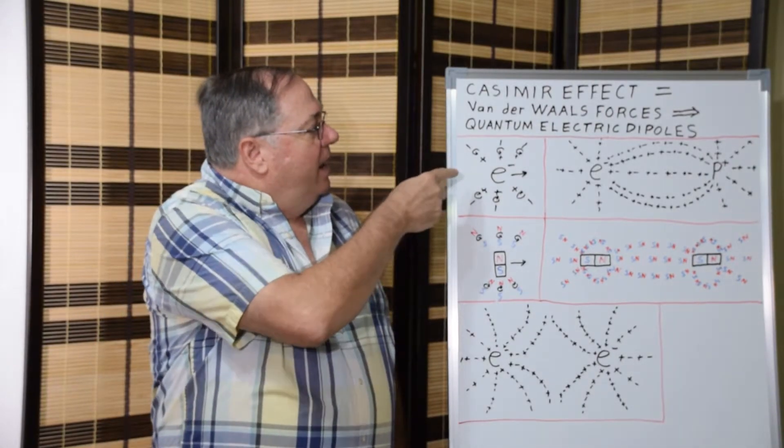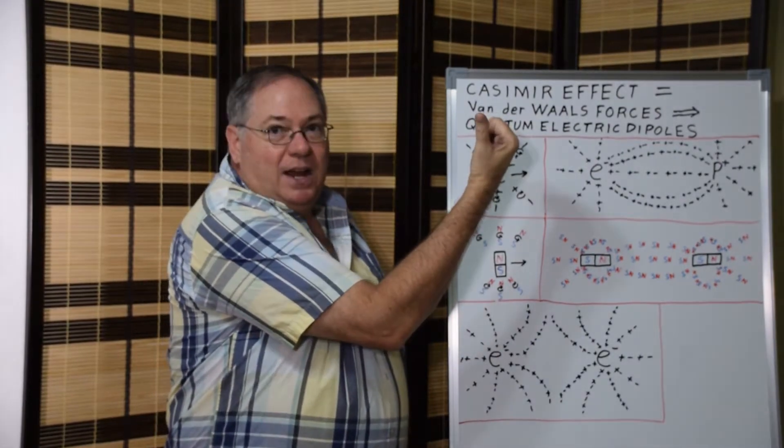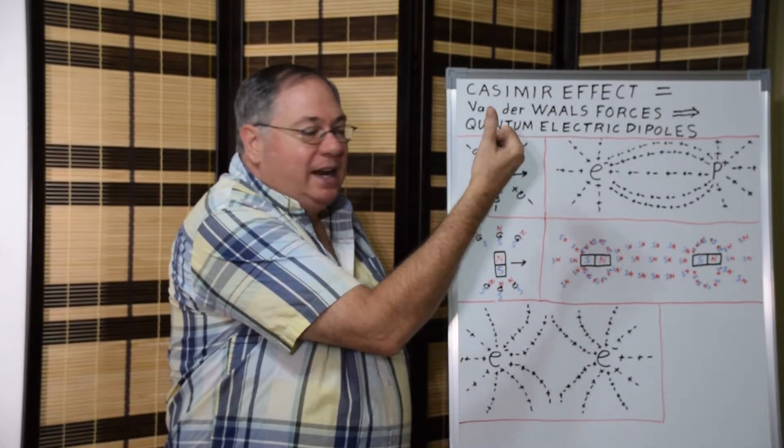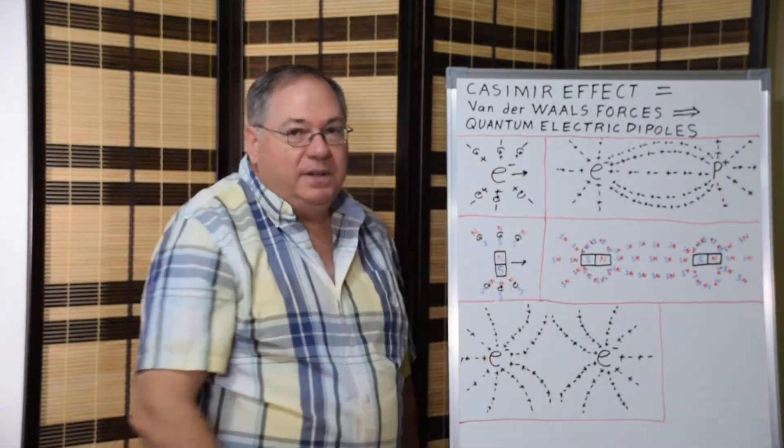So in this case, you can use the right-hand rule, the dipoles on the top have a north pole facing out, and the dipoles on the bottom have a north pole facing inward because the electron is moving this way.